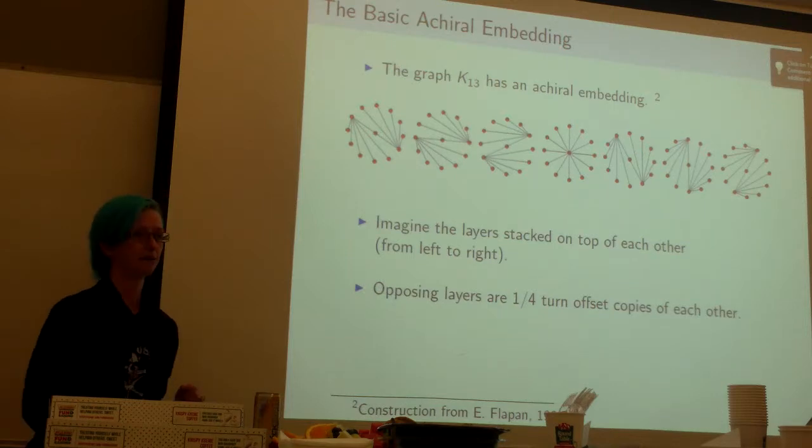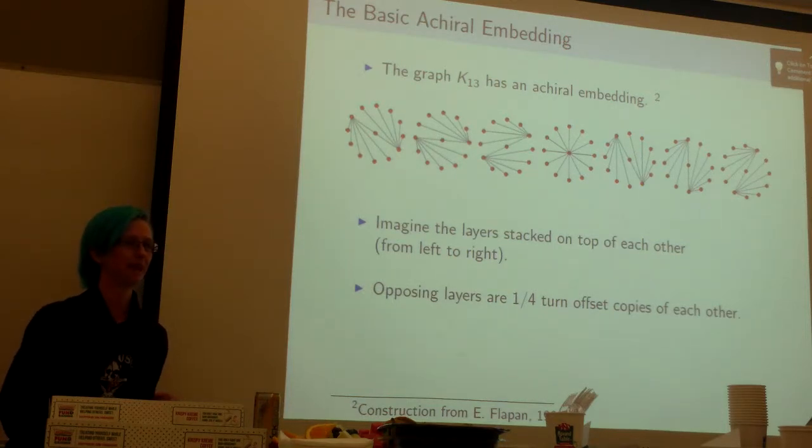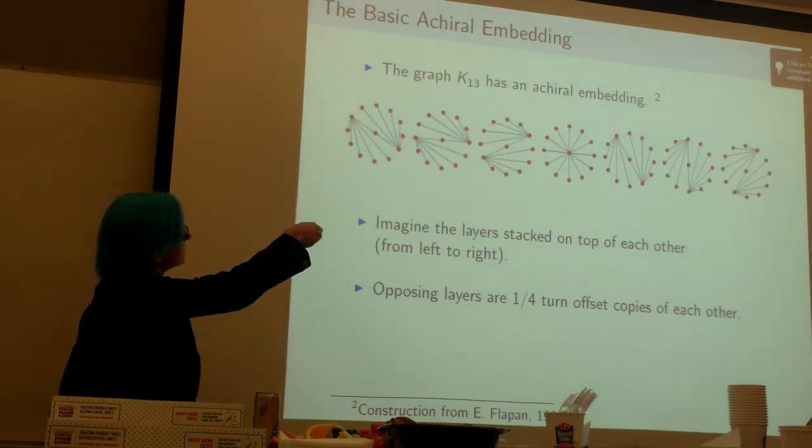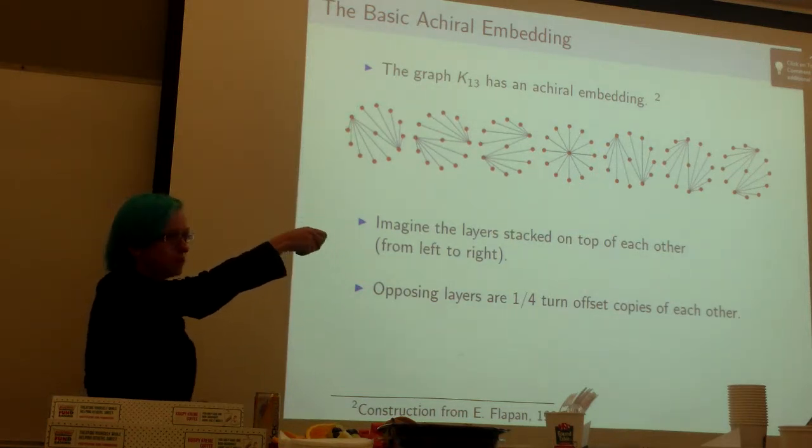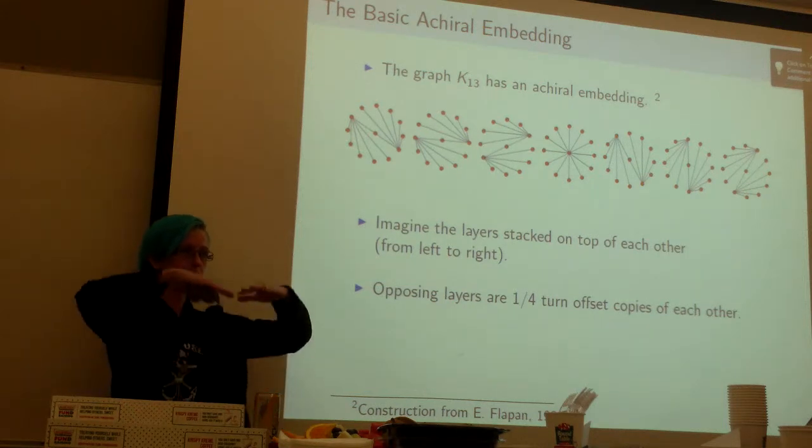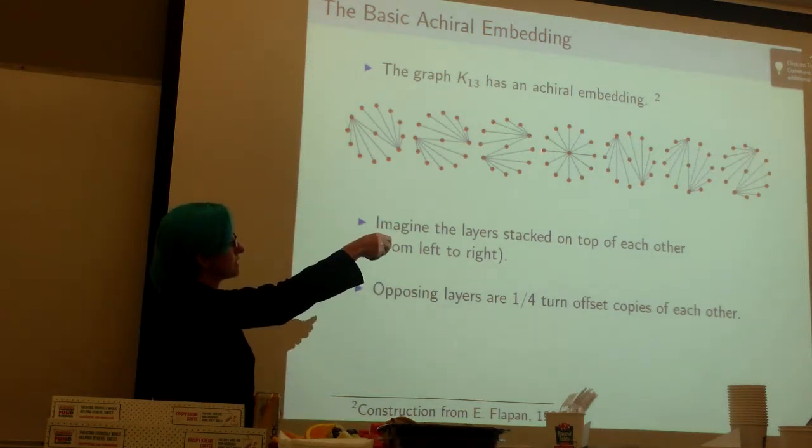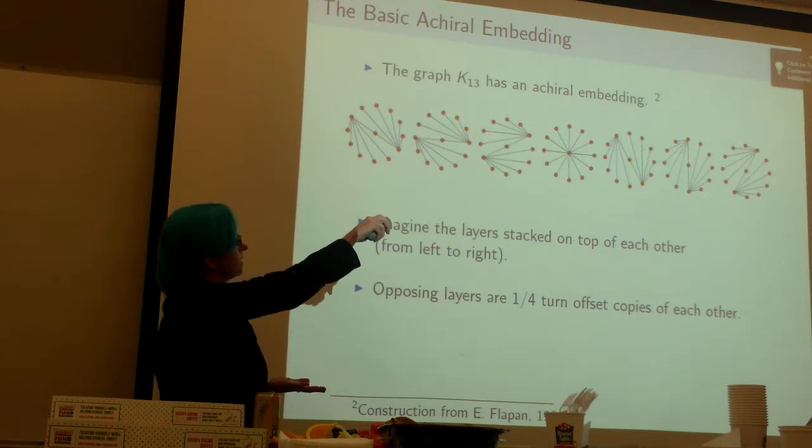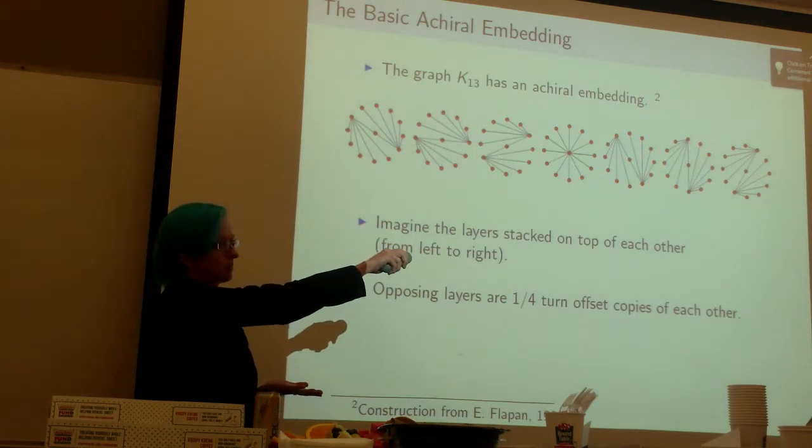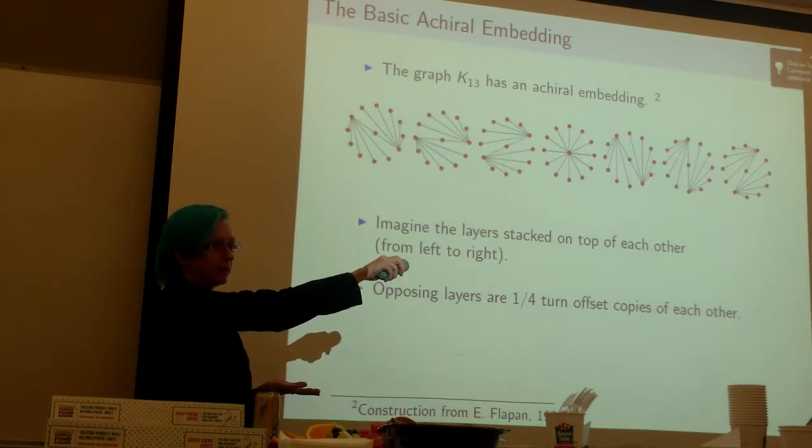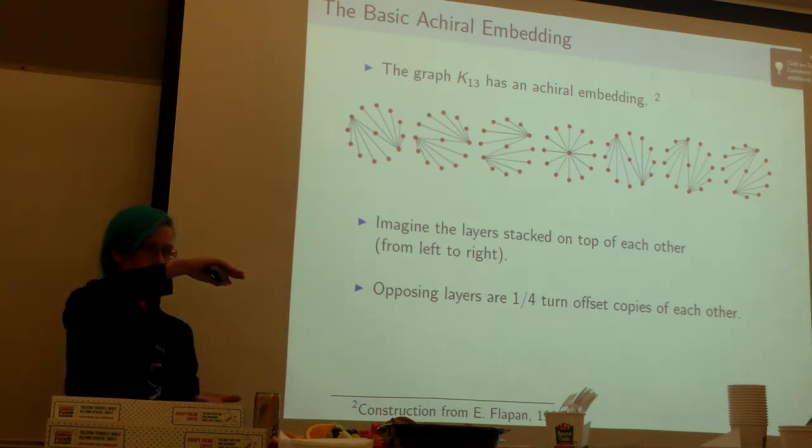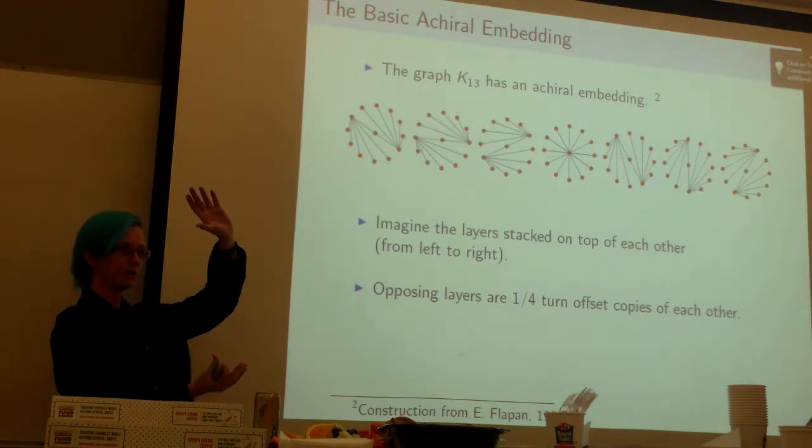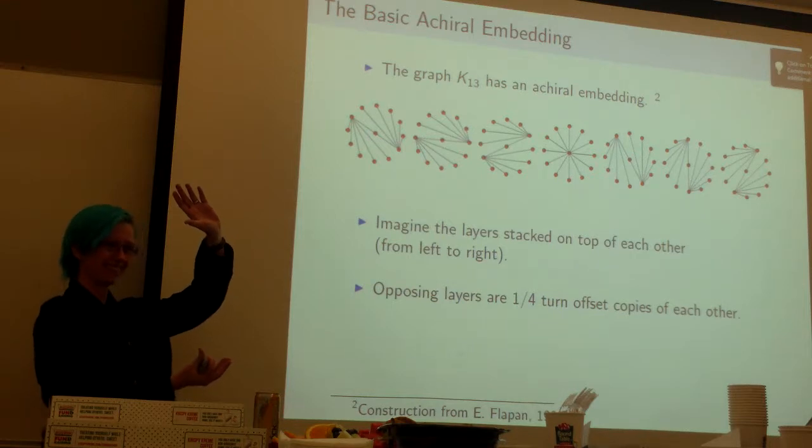This is the achiral embedding that we started with. This is going to take a minute because it's really kind of complicated. These are layers that are stacked on top of each other, so it's kind of built up. And this one that's different from the others is in the center. Then you notice this one is a quarter turn different from that one, this one's a quarter turn different from that one, and so on. So the way you show it's achiral is that if you took its mirror image you could just turn it a quarter turn and it would look like itself again.